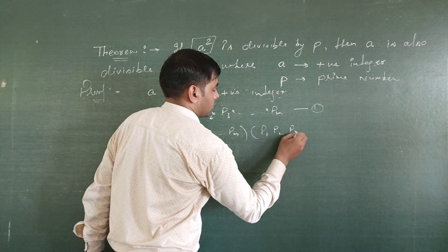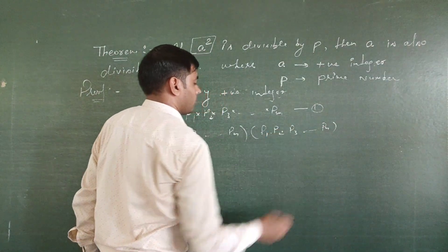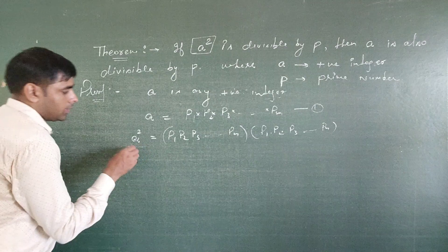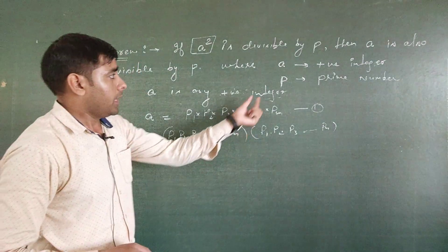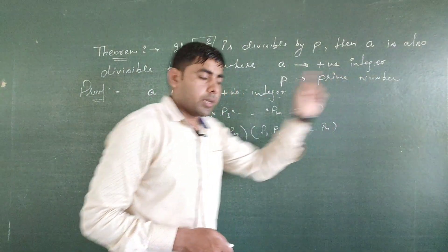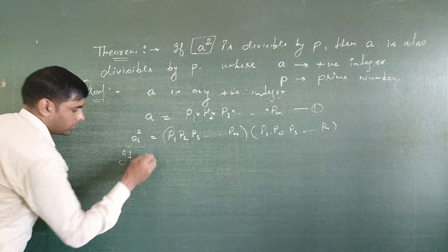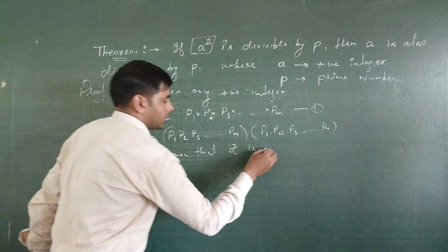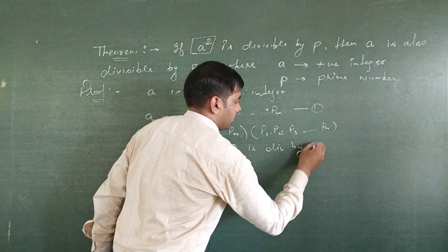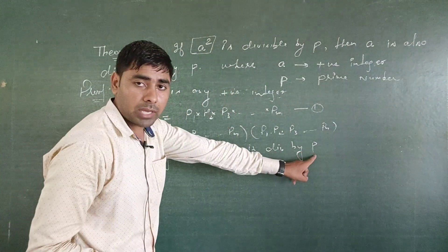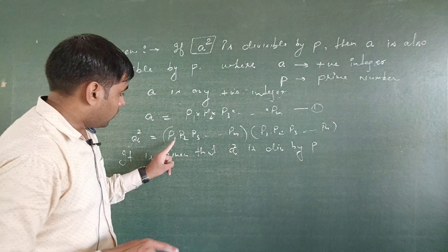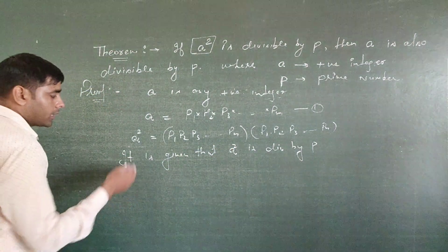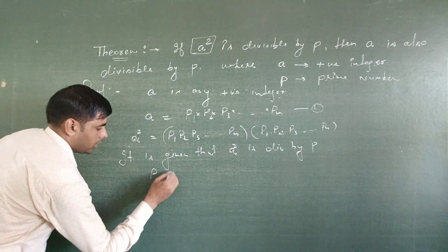Now, it is given that a squared is divisible by p, where p is a prime number. So this p must be one of the numbers p1, p2, p3, ..., pn — one of these prime factors of a.